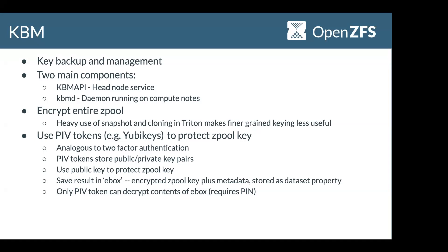The PIV token approach is analogous to two-factor authentication — some crypto purists may disagree, but that's the best conceptual way to think about it. What we do is create a random key for the pool and then encrypt it in what Alex coined an 'e-box' — he's not quite sure what the E stands for — which is analogous to the Diffie-Hellman boxes that Daniel Bernstein, or DJB, came up with in some of his crypto libraries. Essentially you use public-private key pairs to encrypt the actual symmetric key used for the pool, so only the thing with the private key can decrypt it.